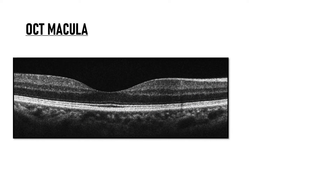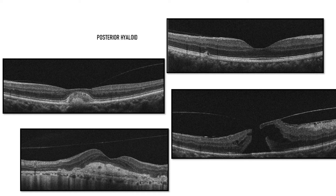The black area in front of the internal limiting membrane is the vitreous. Vitreous has zero reflectivity because it is a clear, optically transparent fluid. The junction between the vitreous and retina is known as the vitreo-retinal interface. The space in front of the macula is known as the pre-macular bursa. The posterior layer of vitreous is the posterior hyaloid, which is not usually identifiable but is visible in cases of posterior vitreous detachment — seen as a hyper-reflective membrane-like floating shadow either completely or partially separated from the retinal surface.